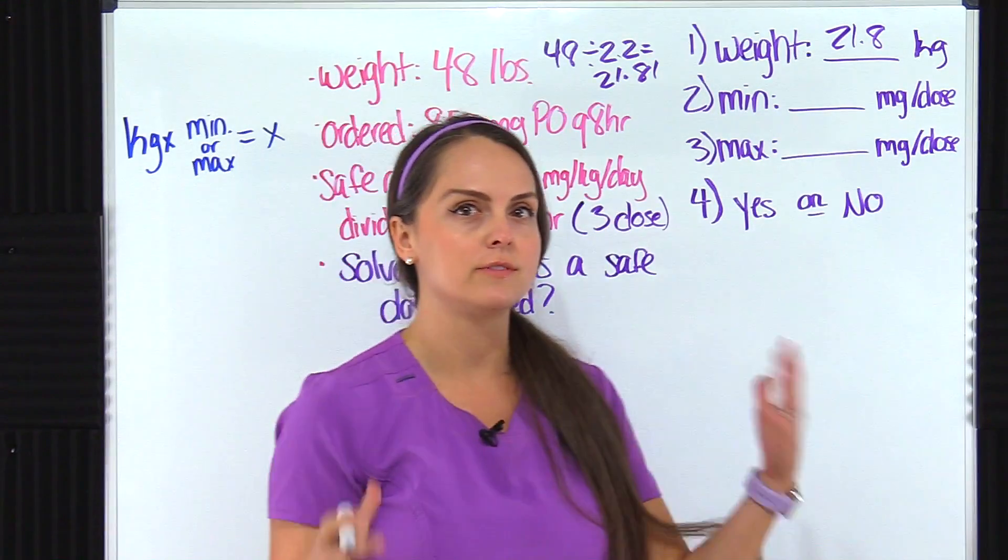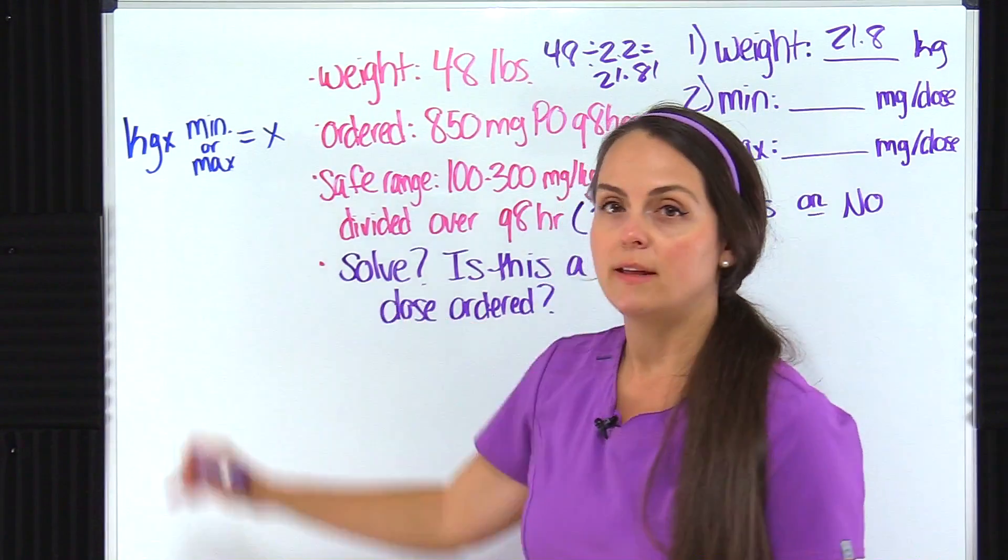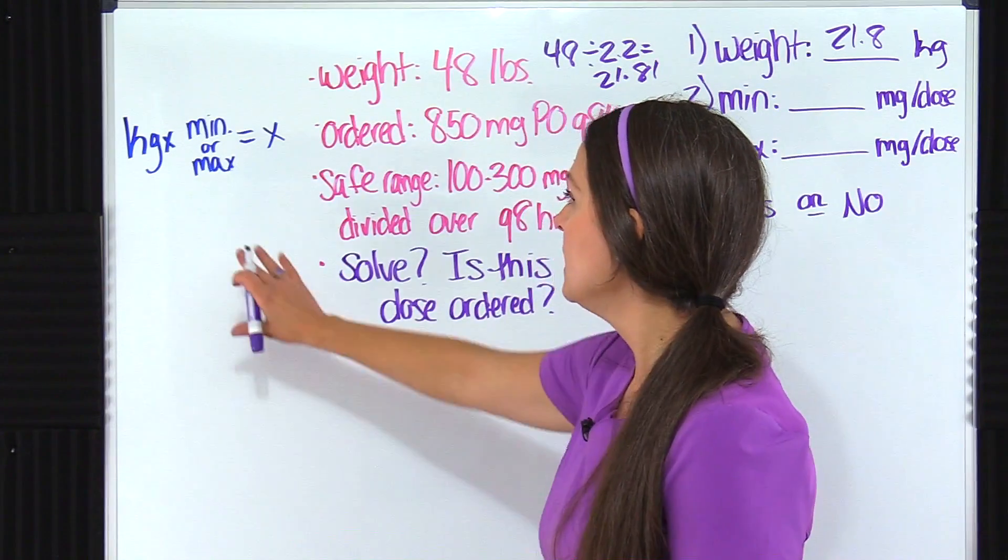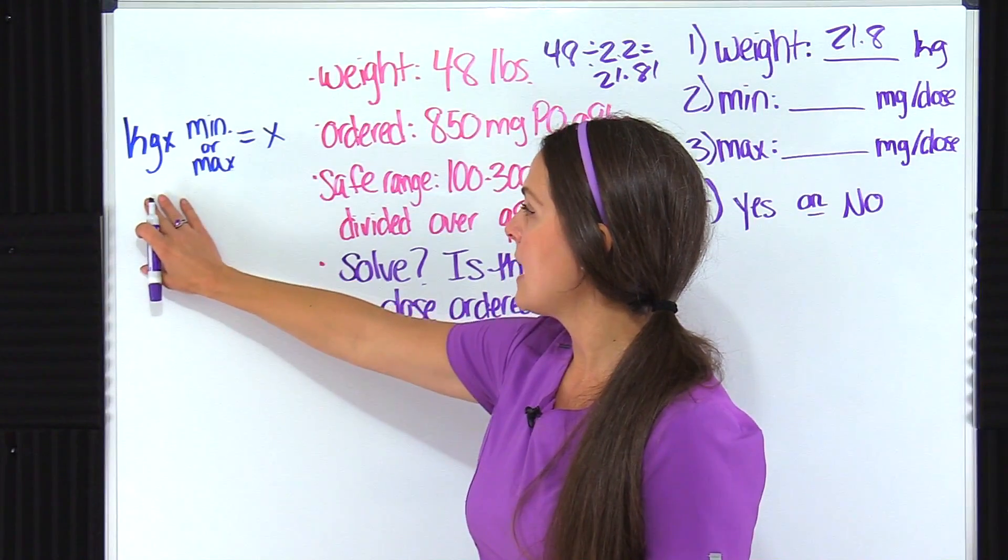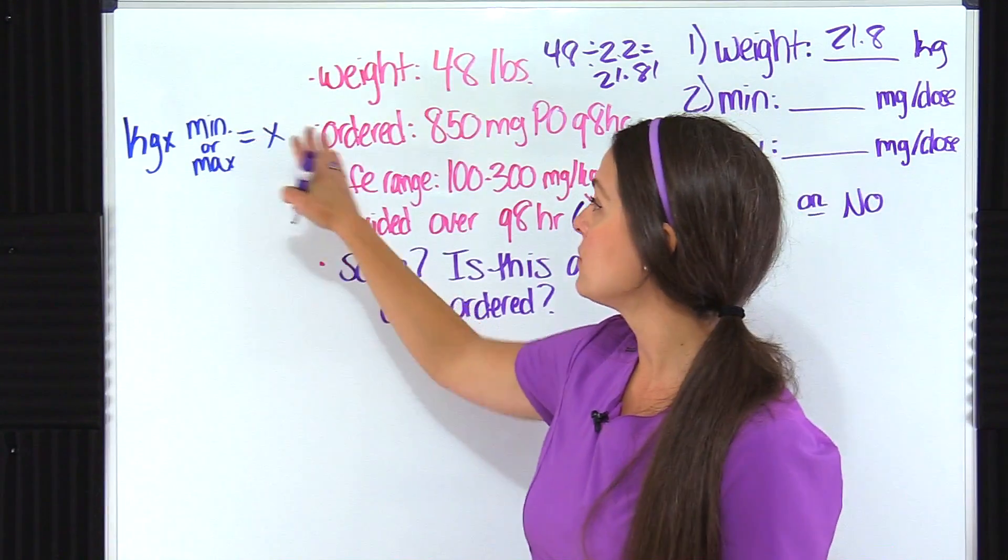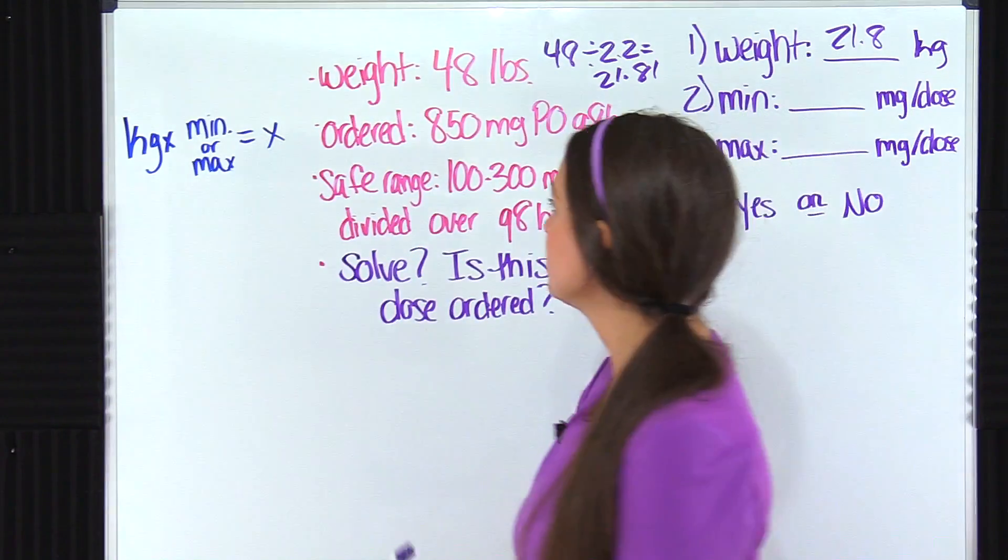So now we can look at those dosages. And to do that, I am going to use a formula. In my other videos, I have used dimensional analysis. So if you prefer that way, you can check out those videos. So this formula tells us that I need the patient's weight in kilograms. I'm going to multiply that by either the minimum dose ordered or the maximum dose ordered, and then I get our dose. So let's do that.